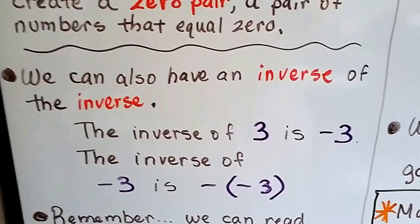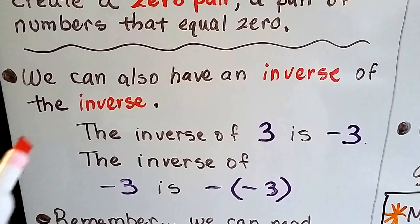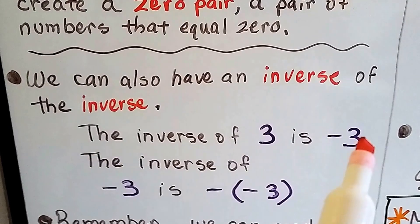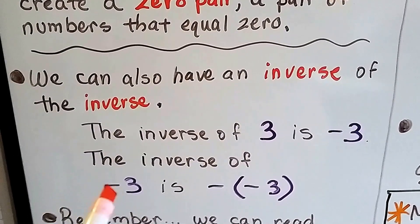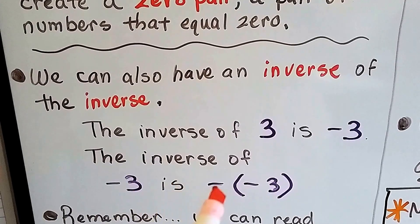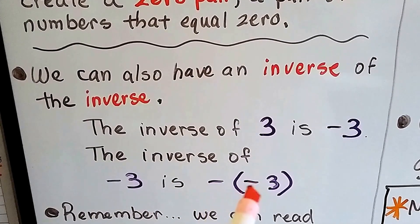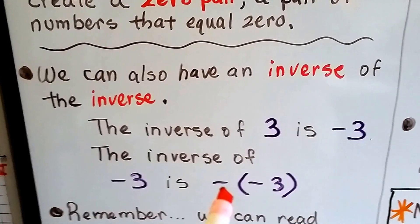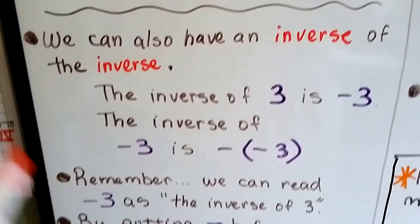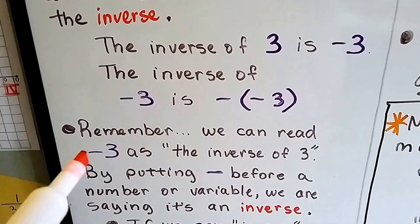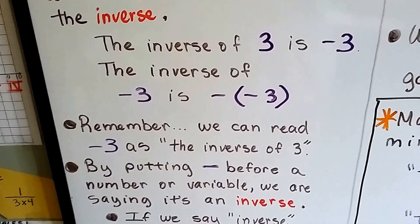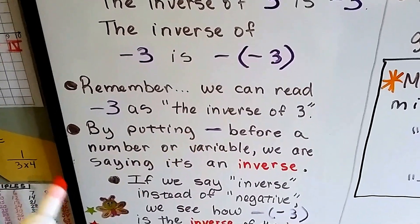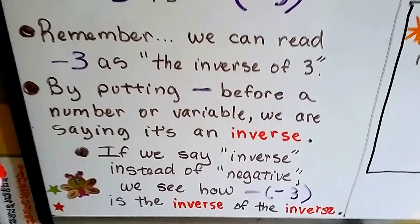We can also have an inverse of an inverse. The inverse of 3 is this minus sign in front of the 3. The inverse of a minus sign in front of a 3 is a minus sign and then the minus sign in front of the 3. Remember, we can read this minus sign in front of the 3 as the inverse of 3.